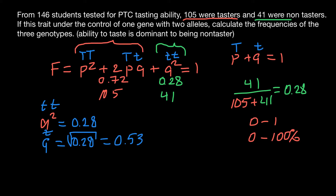Now that we have the frequency of the recessive allele — 0.53 — we can instantly find the frequency of the dominant allele T by subtracting from one: 1 minus 0.53 equals 0.47. So 0.47 plus 0.53 equals one — these are the frequencies of the two alleles.